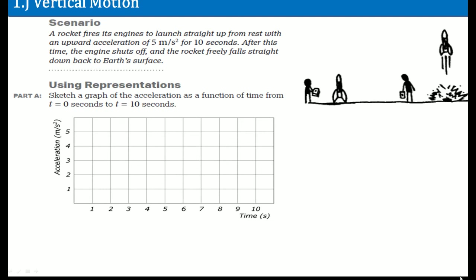Welcome, this is the AP Physics Workbook Solutions. Here I'm covering 1.j, which is vertical motion. Here's the scenario: a rocket fires its engine to launch straight up from rest with an upward acceleration of 5 meters per second squared for 10 seconds. After this time, the engine shuts off and the rocket freely falls straight down back to the surface.